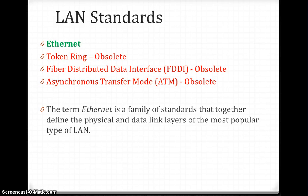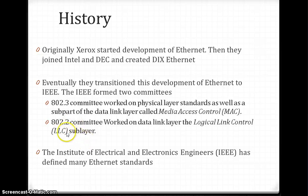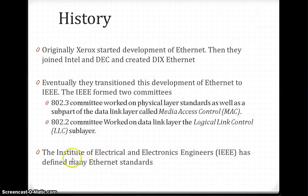Originally, Xerox started Ethernet, then Intel and DEC joined. They called it DIX — D for DEC, I for Intel, X for Xerox. Eventually they transitioned development to the IEEE, which created two committees: 802.2 and 802.3. 802.2 controls the LLC (Logical Link Control) sublayer and 802.3 controls the MAC (Media Access Control) — dividing functionality across the data link layer.